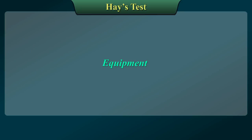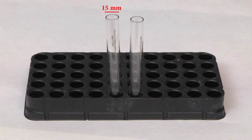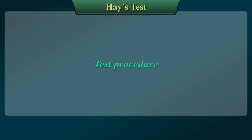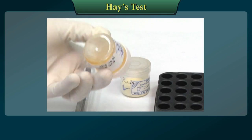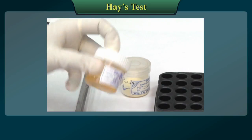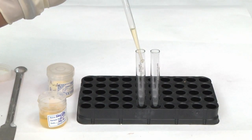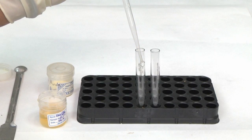Equipment: Test tubes of dimensions 15 x 125 mm, spatula, and test tube rack. Procedure: All standard precautions should be followed. Mix the urine sample well. Take 10 ml of urine in a test tube and place it in the standing position in a test tube rack.